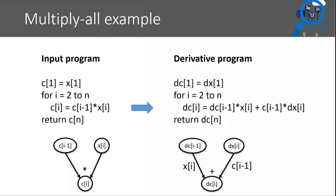Going back to the example of multiplying an array of numbers: the key step is that we want to linearize every operation. There's only one nonlinear operation - the multiplication between C_{i-1} and X_i. Drawing the little graph for that nonlinear operation, it should turn into a linear function of its two inputs. I rename the two inputs to have D in the front, and put the partial derivative as the coefficient - which in this case is X_i and C_{i-1}. Then all you do to get the derivative program is rename all variables with D in the front and replace the operations with their linear equivalents.